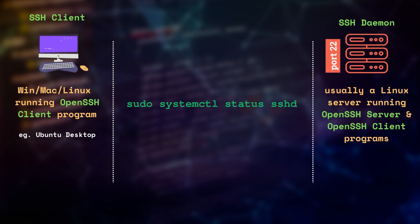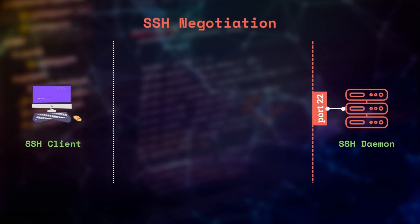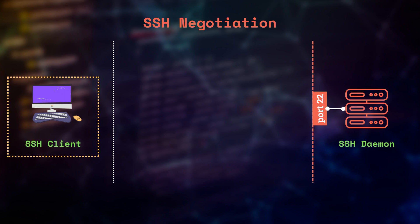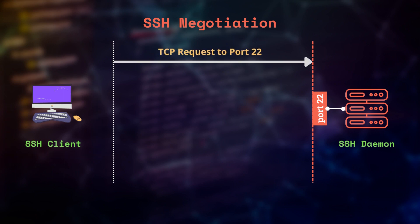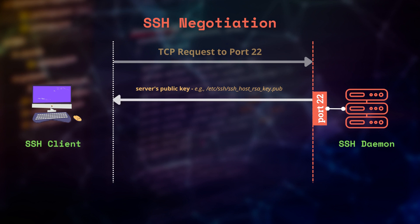Now let's have a look at the connection process. In an SSH connection, the client is the one who always initiates the connection. The client sends a TCP request to port 22 of the server, which has the SSH daemon process running on it. Upon receiving the connection request, the server sends its public key fingerprint back to the client. Keep in mind that this is not the key you use during authentication. Instead, it is the server's public key set up when the SSH program was installed on it.